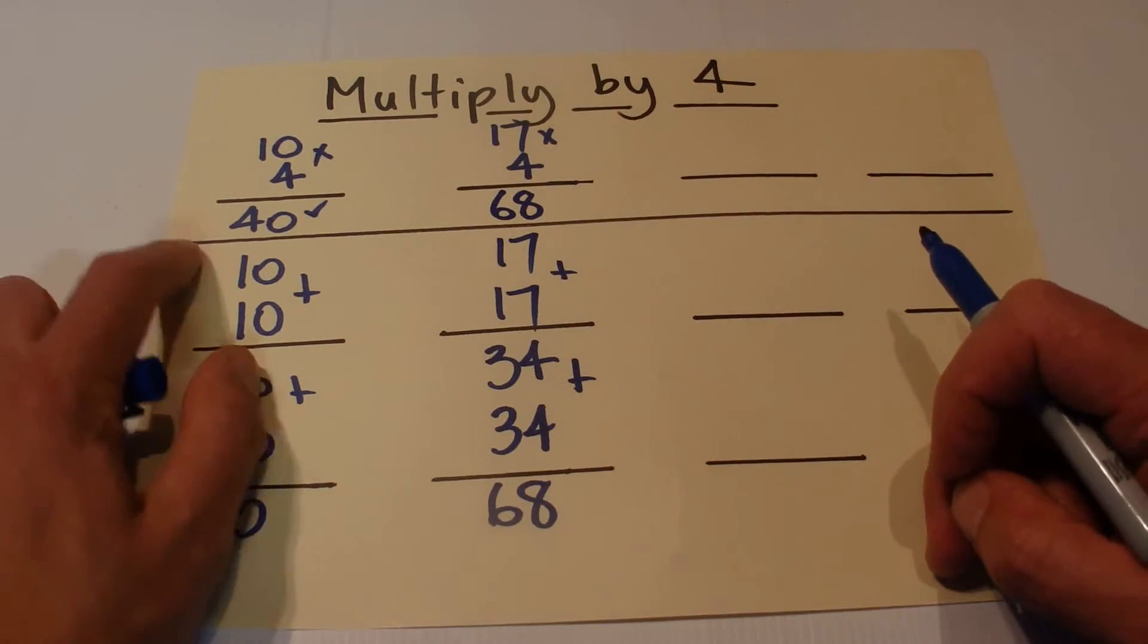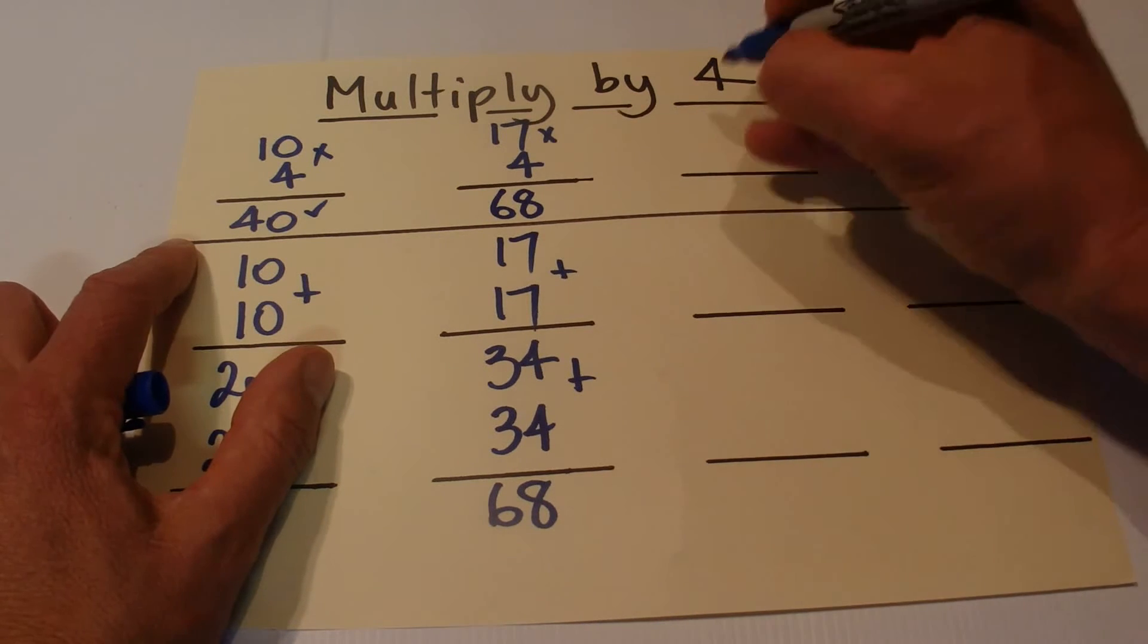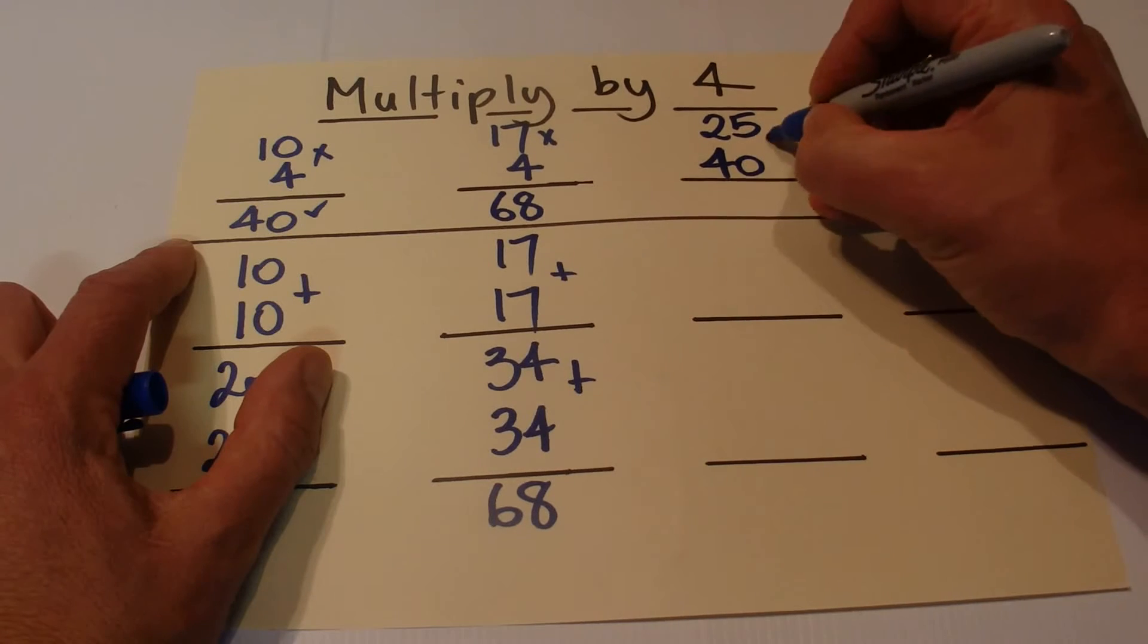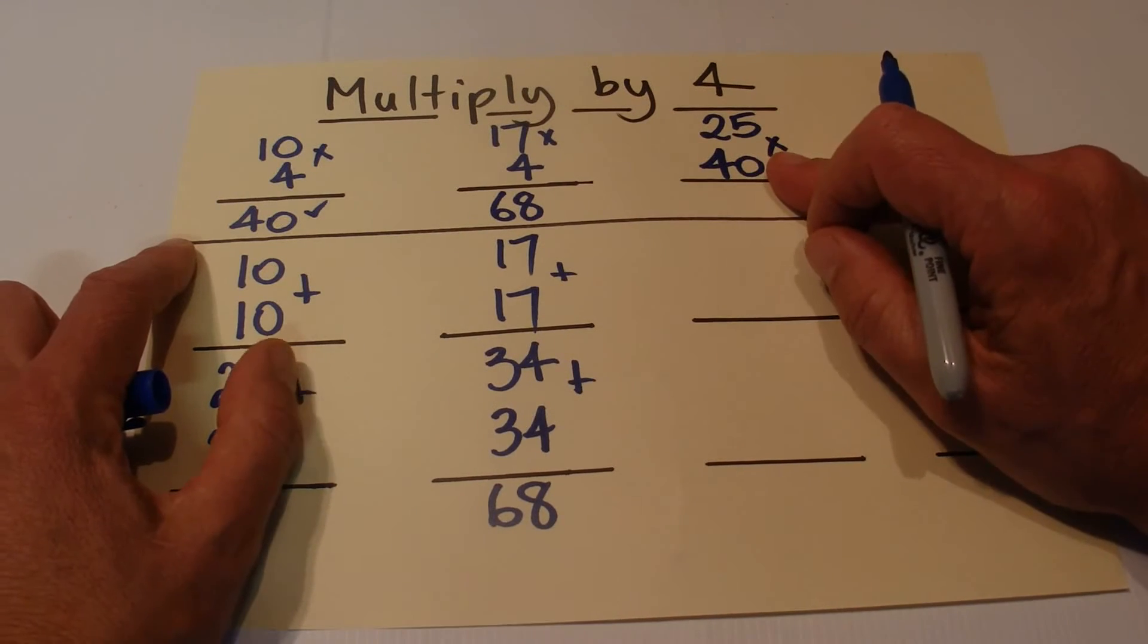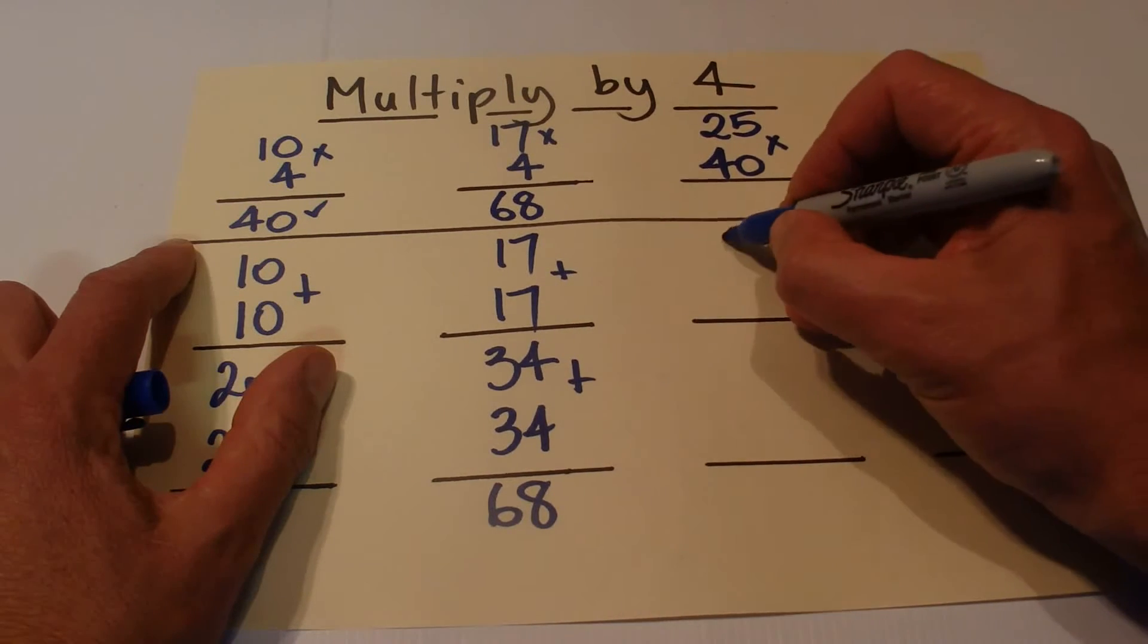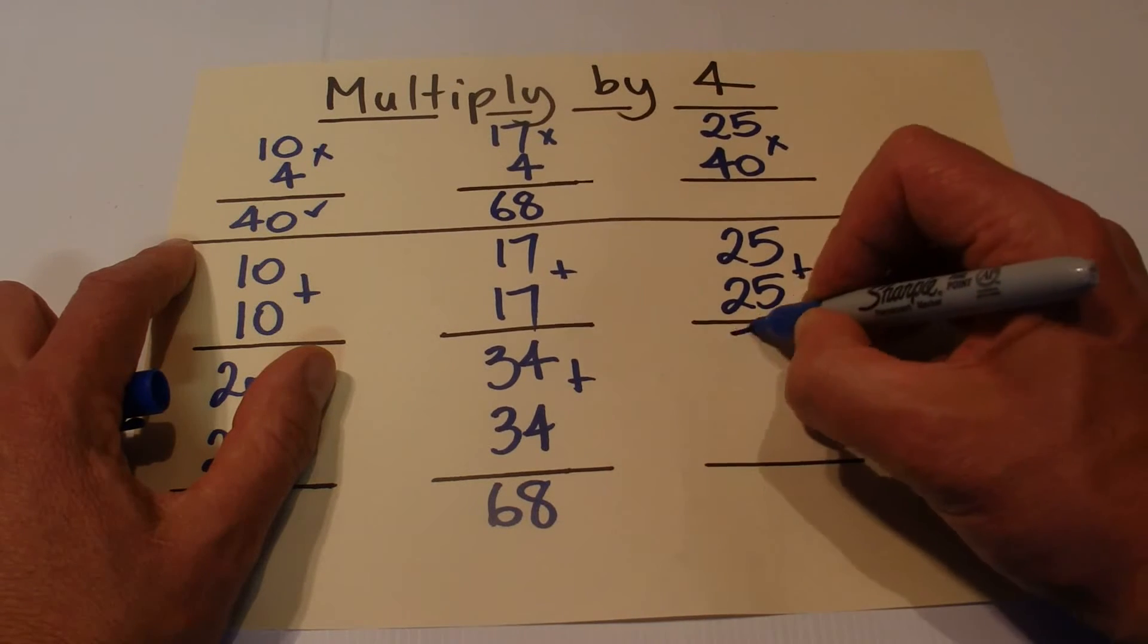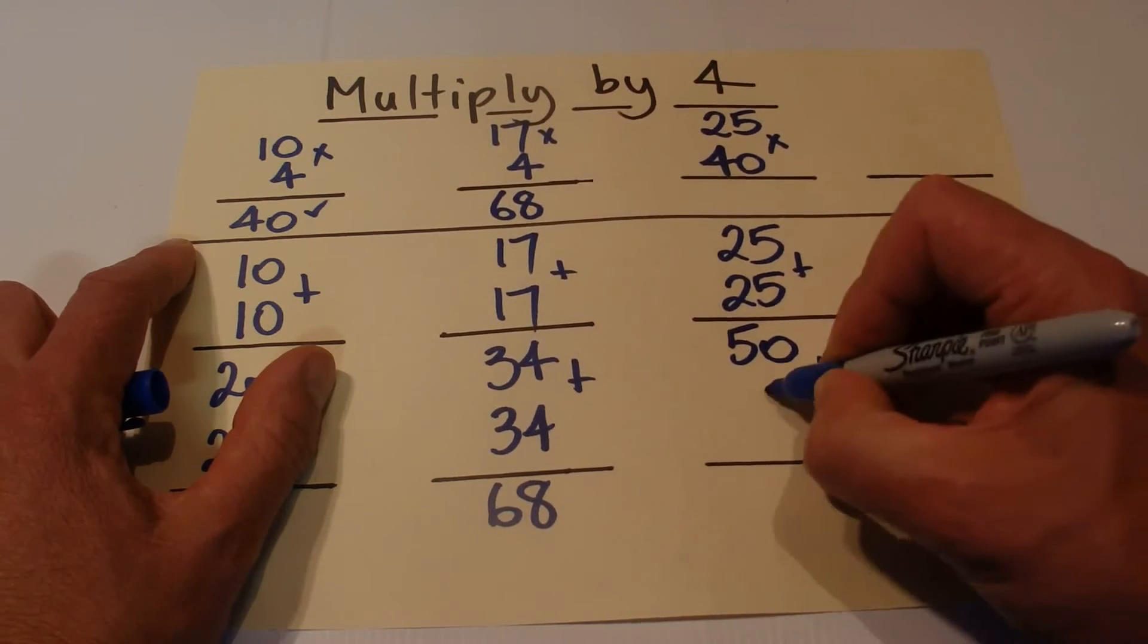The same principle applies if you want to multiply by 40. So 25 times 40: we'll take the 25 and we'll double that once to get 50, and we'll double that a second time to get 100.